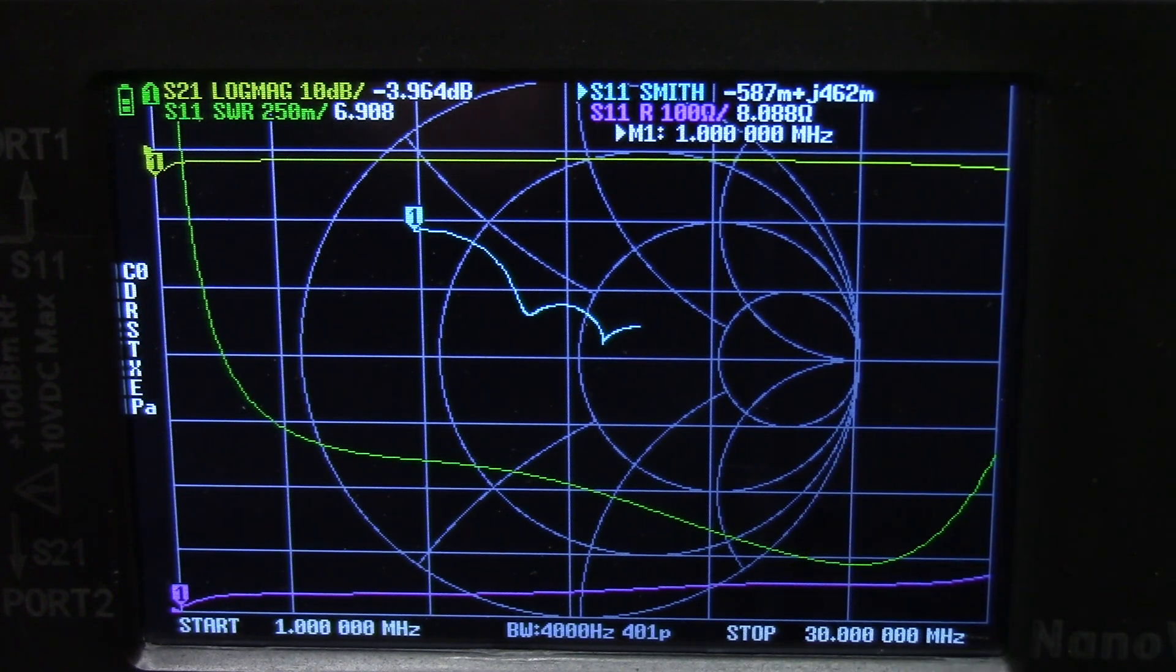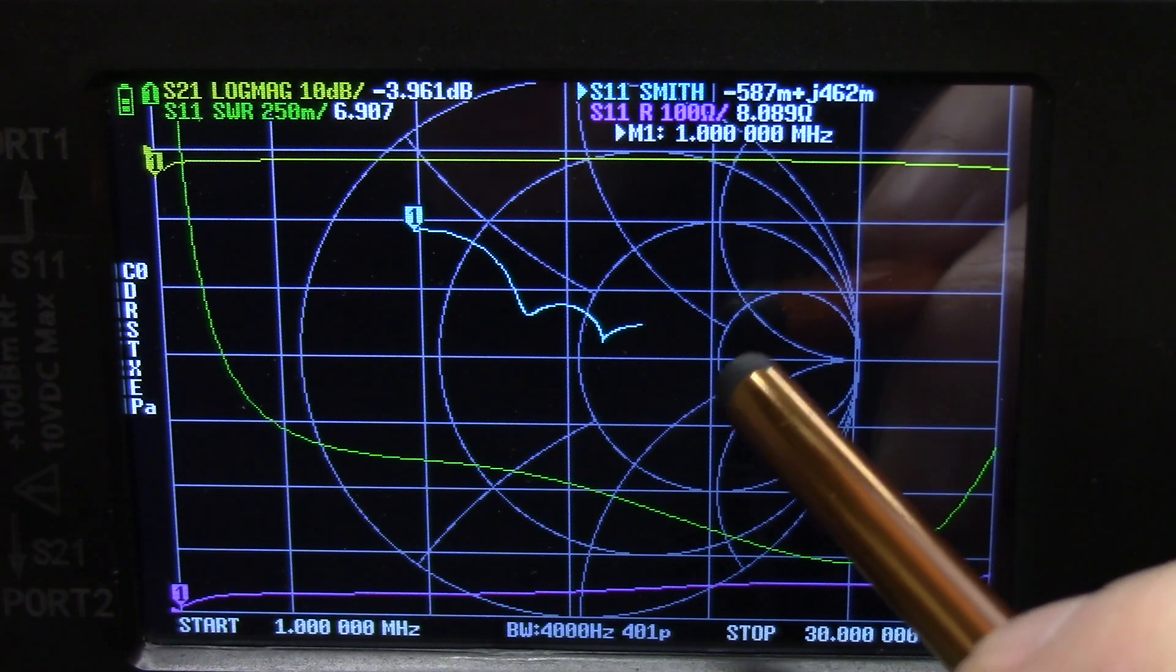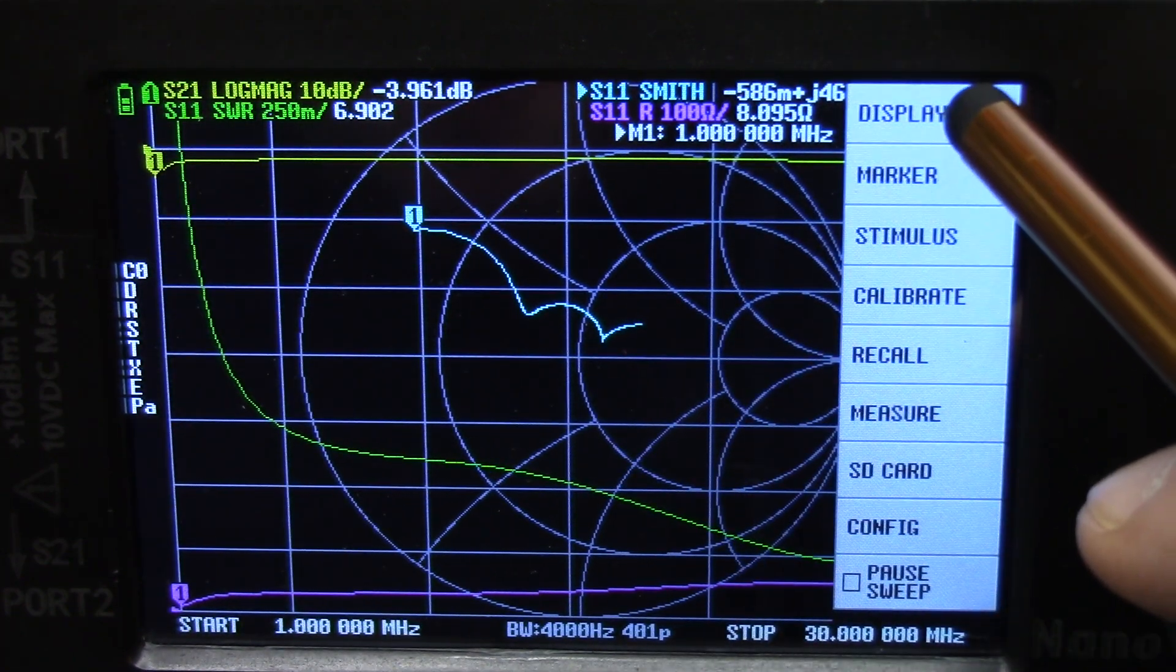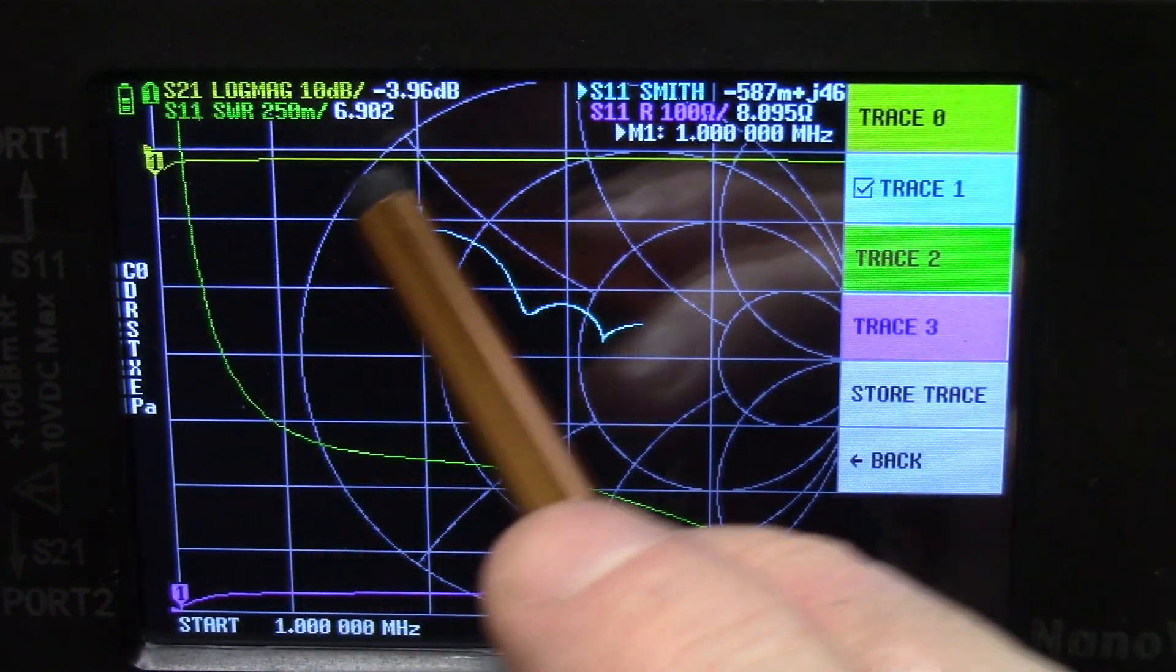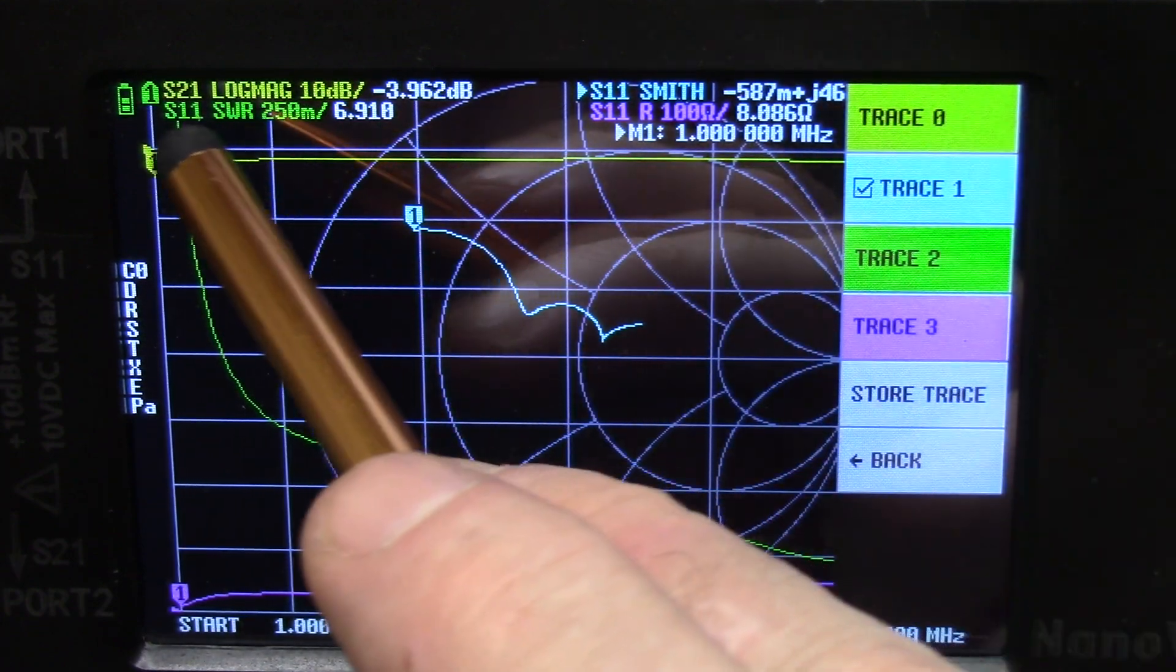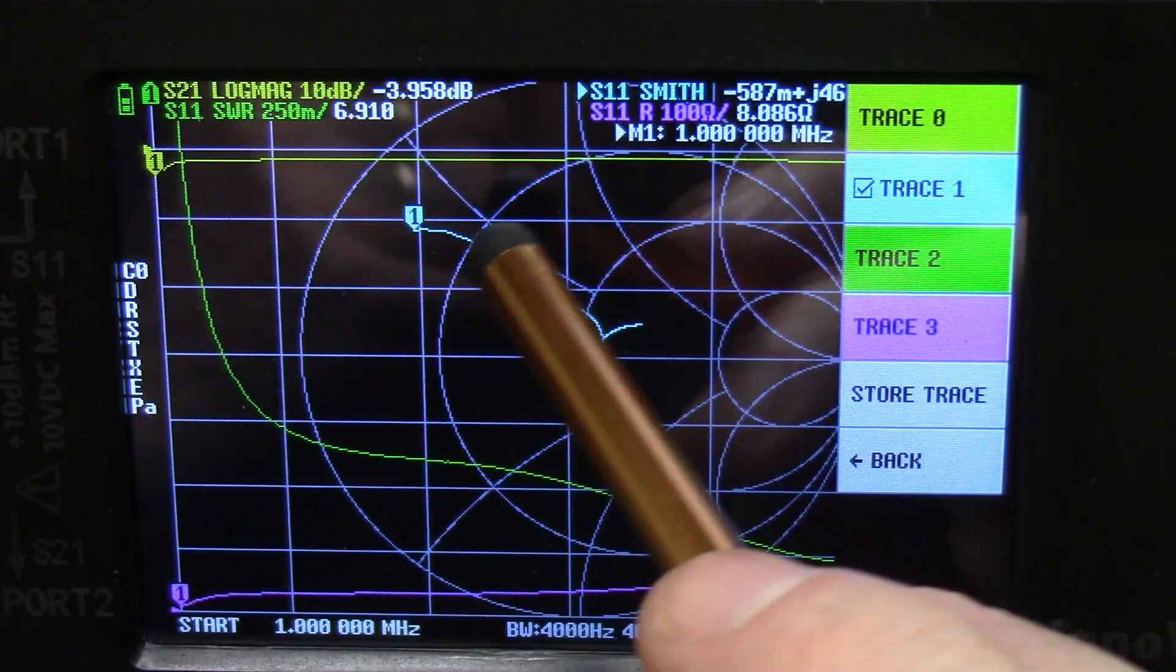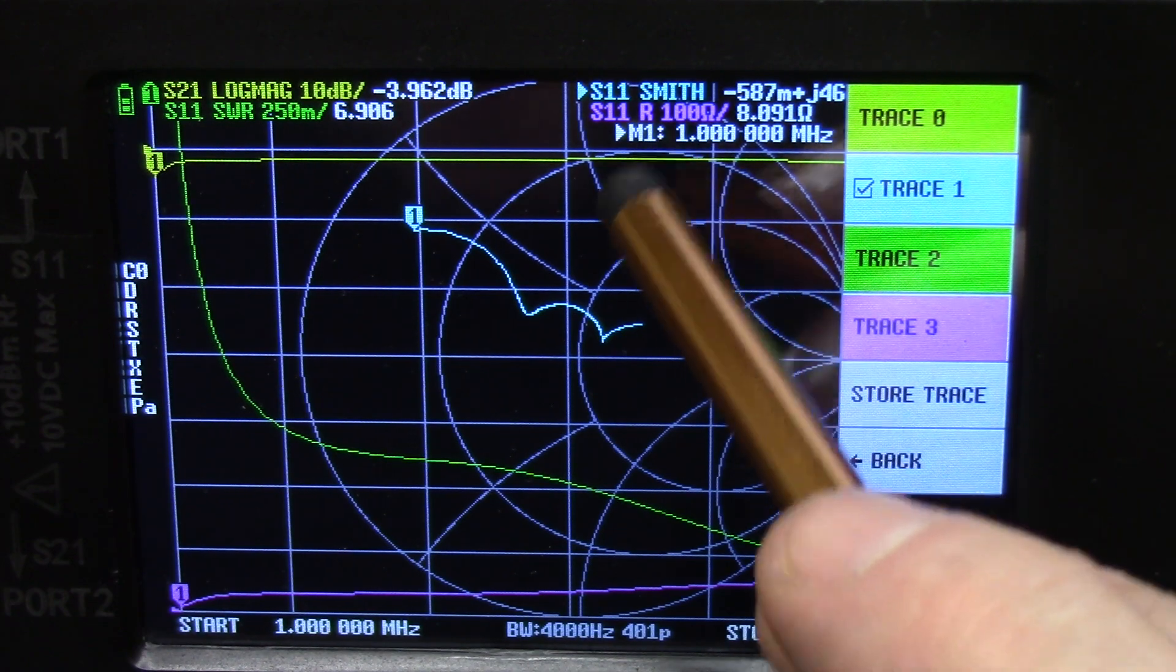The only thing that we're going to be interested in is the S21 Log Mag. So let's go into the menu, just tap anywhere on the screen and then go into display, trace, and right now we do have S21 Log Mag on here which is on the yellow trace which is trace zero.